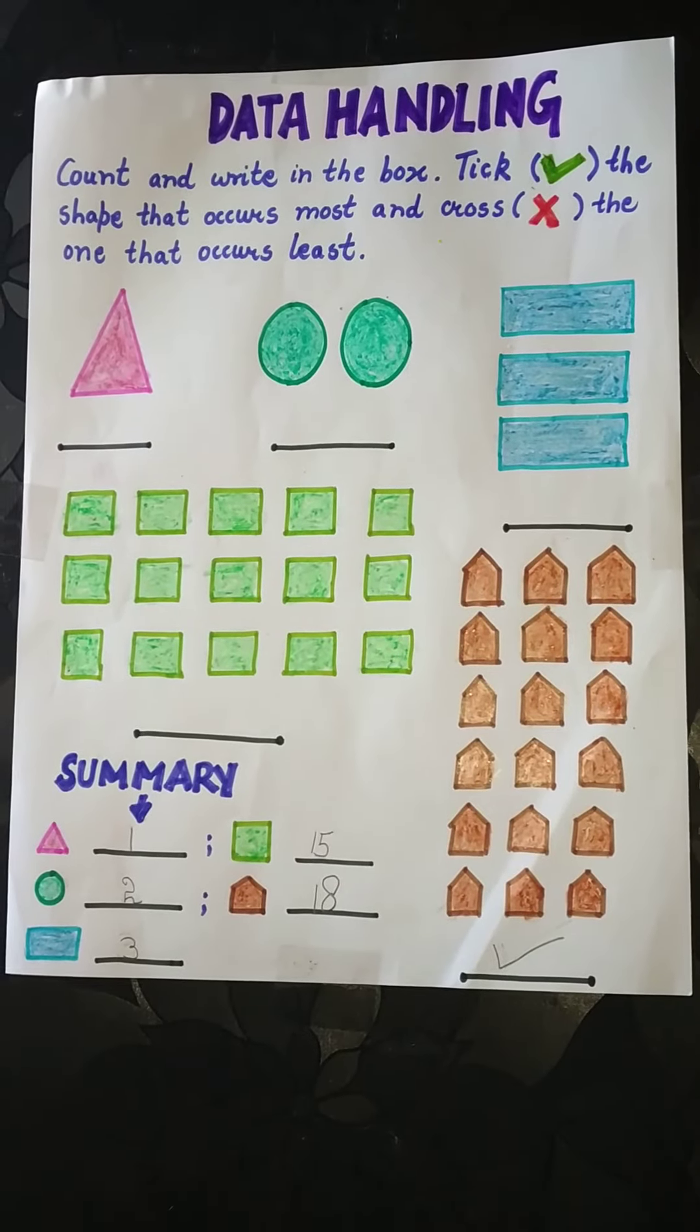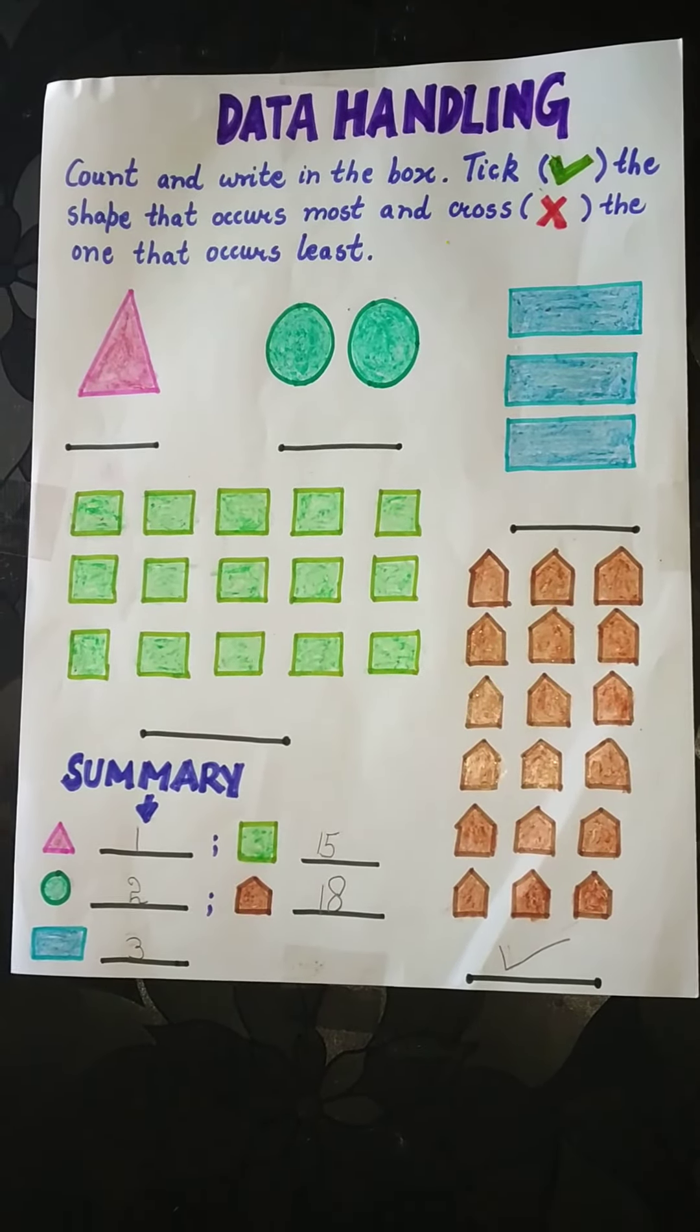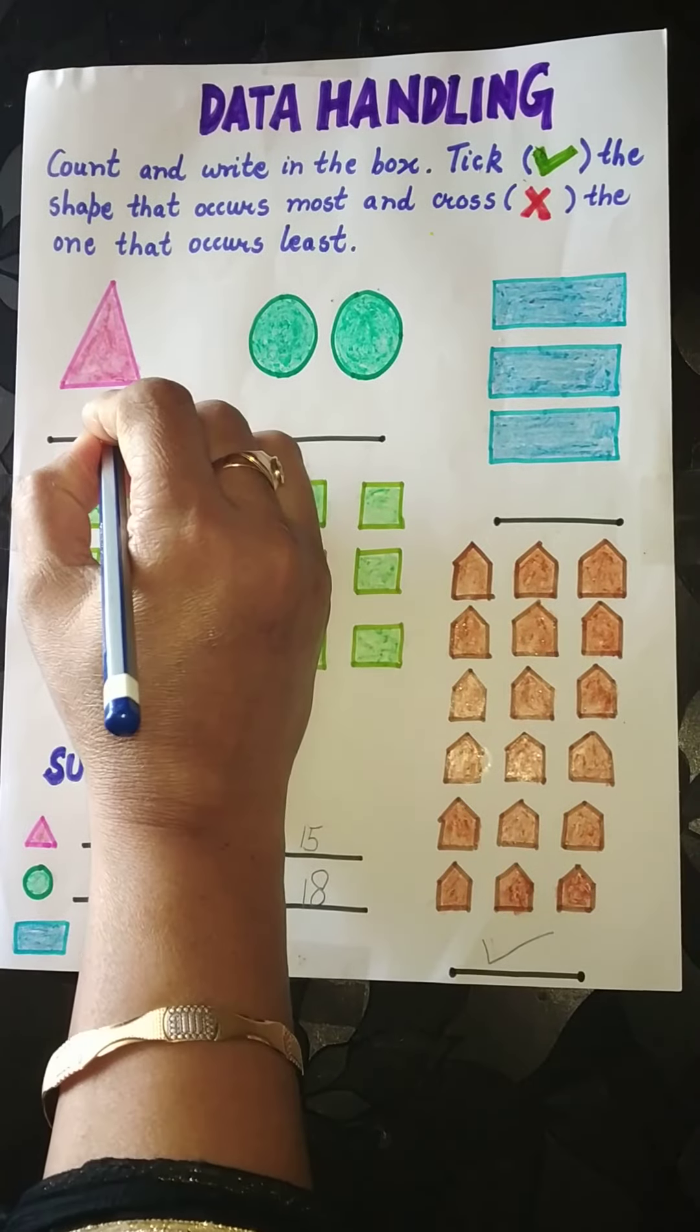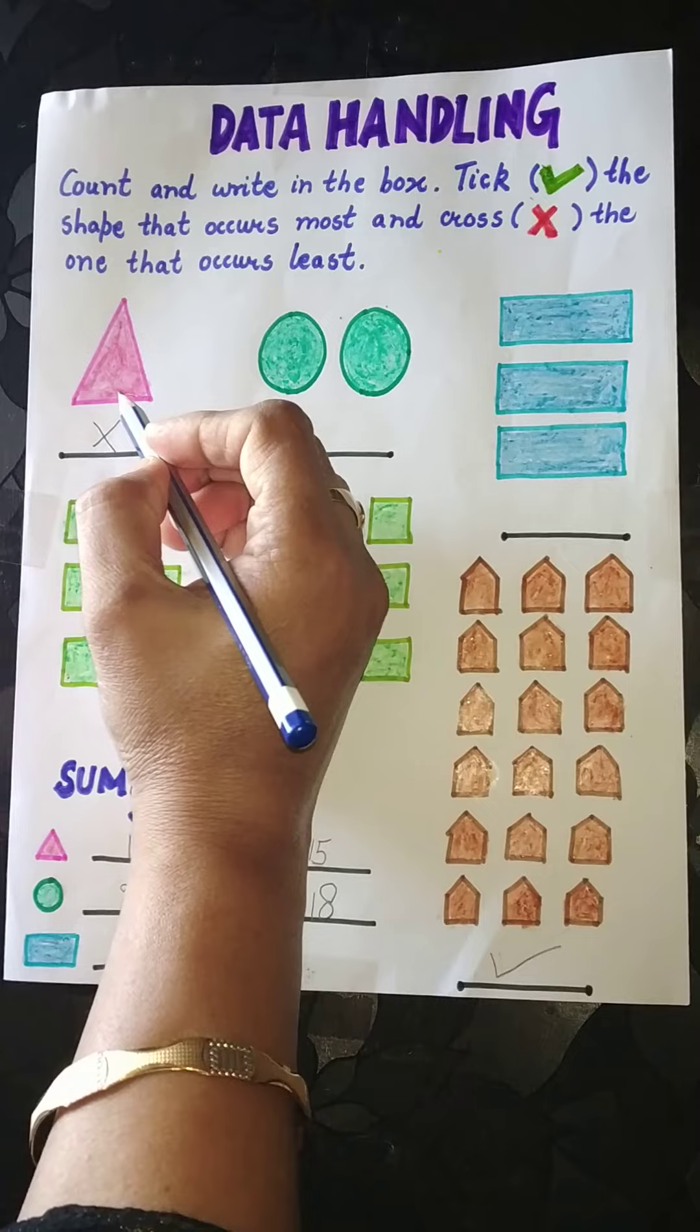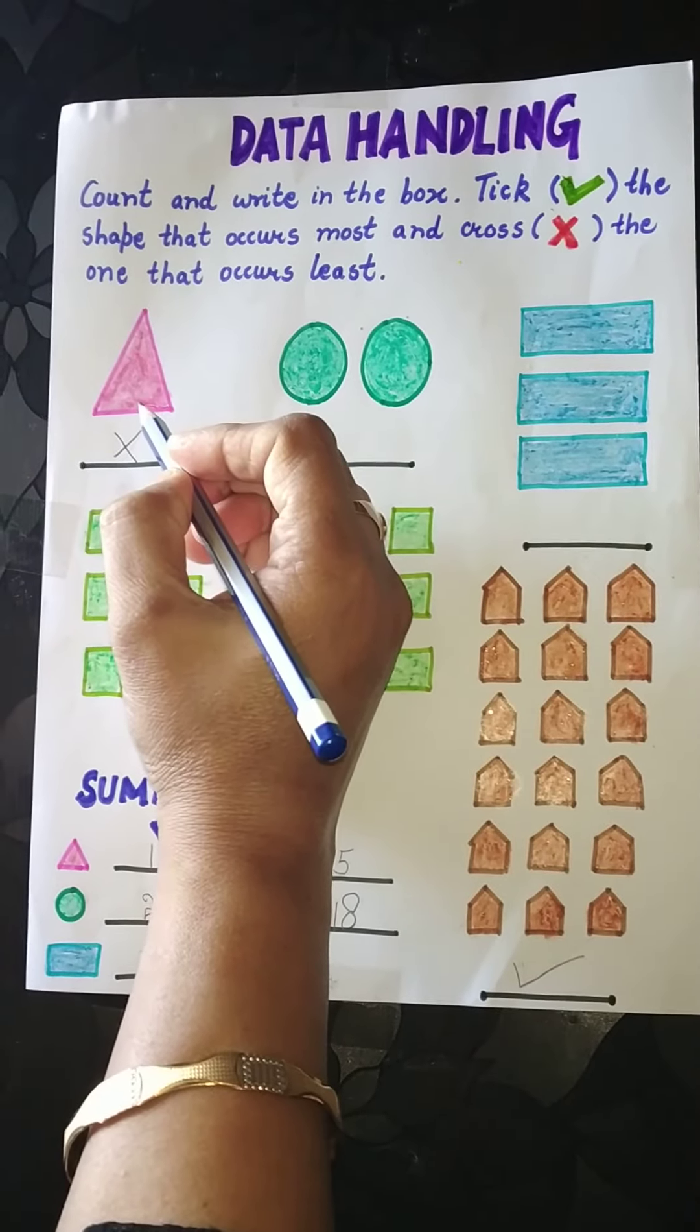So tell me the shape that is present least. Yes. Here we will cross the triangle. Triangle is only one. This one occurs least. Okay.